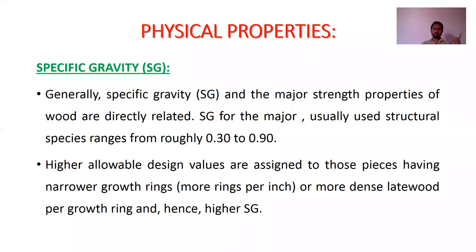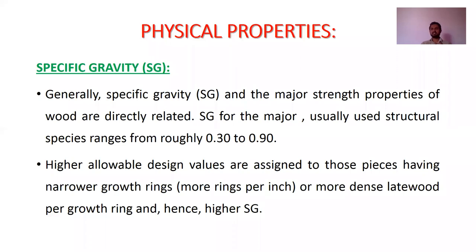In the previous explanation, if the growth of a tree is very fast, then the annular rings forming will be far from each other — that type of wood will not have more strength and will not have good specific gravity. But if the annular rings are near to each other, it means that wood has more specific gravity and more strength. If those rings are far from each other, the specific gravity is less and the strength will also be less.